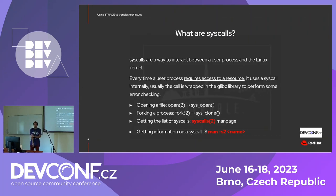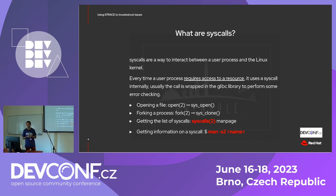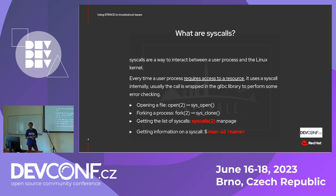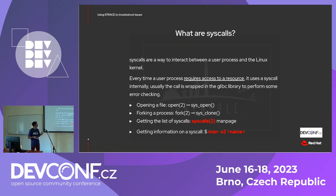Strace is all about syscalls, but what are syscalls? Syscalls are a way to interact between your user process and the Linux kernel. Basically, every time a user process requires access to a resource, it uses a syscall internally. This syscall is wrapped in a glibc function for error checking and other stuff. For example, when your program — which can be C or Python or anything — calls open, it internally calls sys_open, which is the syscall associated to that.